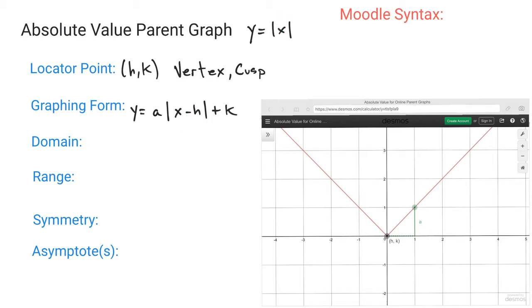The domain here, you can do the absolute value of all values, negative, positive, zero, etc. So the domain is going to be all reals. You can also use the inequality notation. So that would be negative infinity is less than X, which is less than positive infinity.